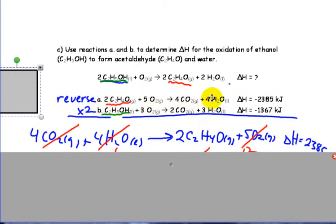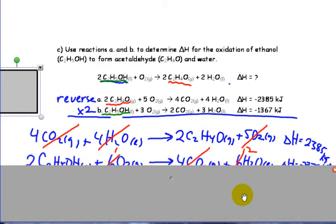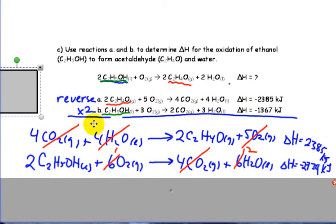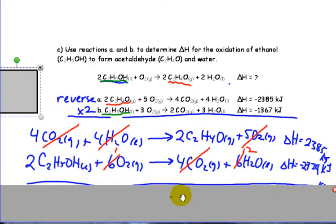So, reversing this first equation, these products become reactants. These reactants become products, and the negative 2,385 becomes positive 2,385. The second equation, double everything. So, now I have two C2H5OHs, three times two is six O2s, two times two is four CO2s, two times three is six H2Os, and two times negative 1,367 is negative 2,734. And, in terms of cancelling things here, we have four CO2 on the left, four CO2 on the right, those cancel out. Four H2Os will cancel with four H2Os on the right, and of course, I have extra ones on the right-hand side. I'll be left with two, so it all doesn't get cancelled out.